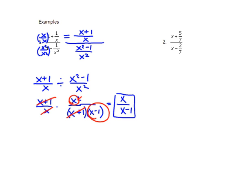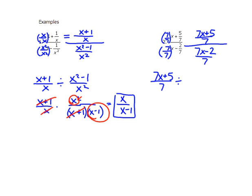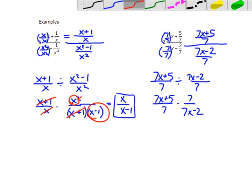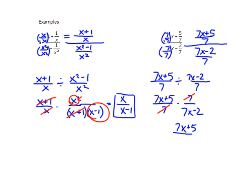For the second example, the common denominator in the numerator is seven, so I multiply the first fraction by seven over seven, giving seven x plus five over seven. Then, separately in the denominator, I get seven x minus two over seven. Rewriting with the division symbol and applying keep-change-flip, the only thing that cancels is the sevens. Don't look at those seven x's — they are parts of groups, they stick together. The final answer is seven x plus five over seven x minus two.